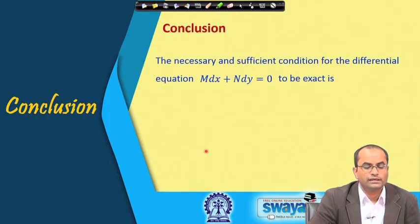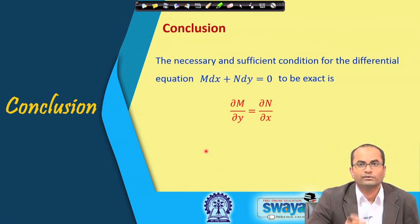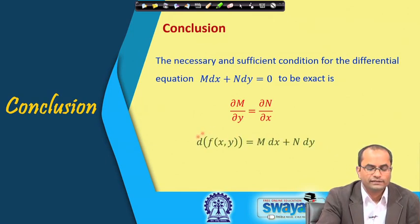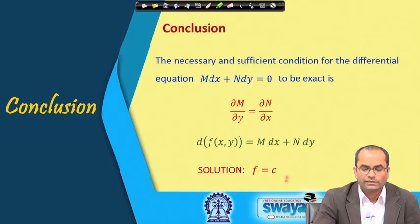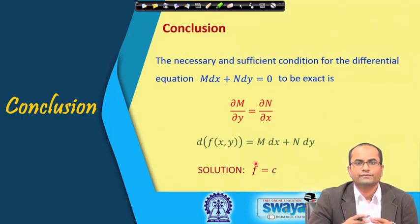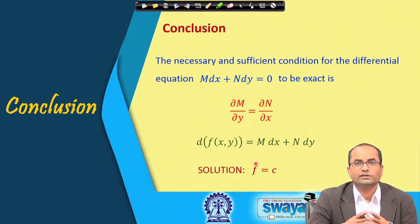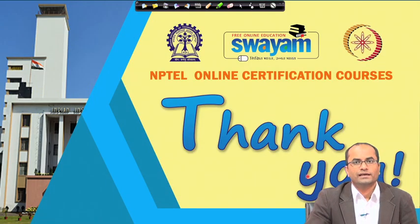In conclusion, the necessary and sufficient condition for M dx + N dy to be exact is ∂M/∂y = ∂N/∂x. Once exact, we find f whose differential is M dx + N dy and write the solution as f = c. In the next lecture, we will discuss methods for solving differential equations that are not exact. Thank you for your attention.